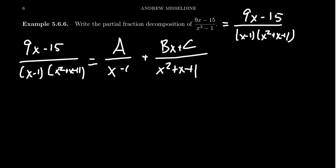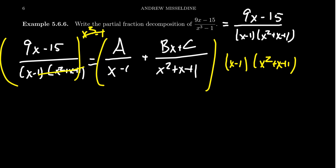My strategy is going to be, let's clear the denominators, multiply both sides by the LCD. So we multiply both sides by x minus 1 and x squared plus x plus 1. We do that to the left-hand side as well, times both sides by x cubed minus 1. They will cancel out the denominators on the left, leaving you just the numerator 9x minus 15.